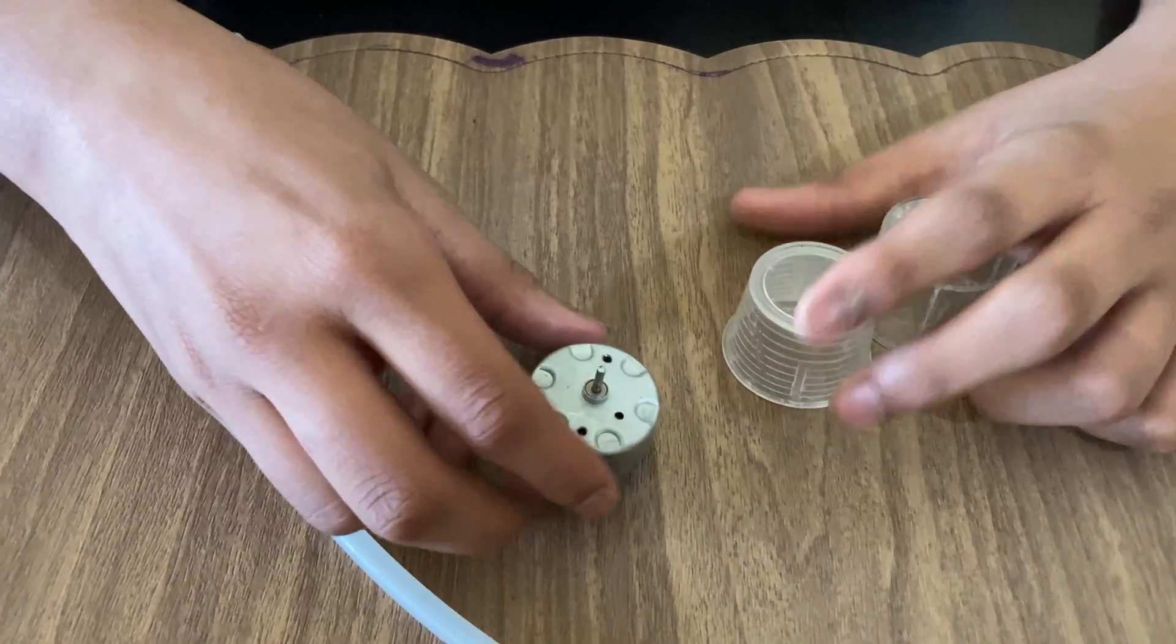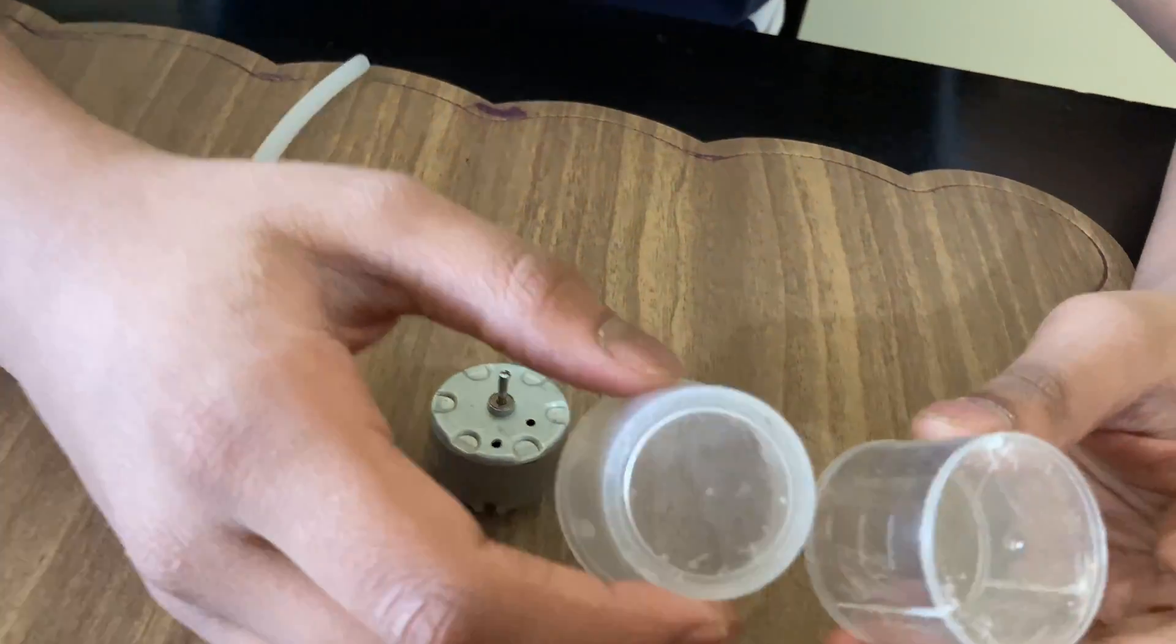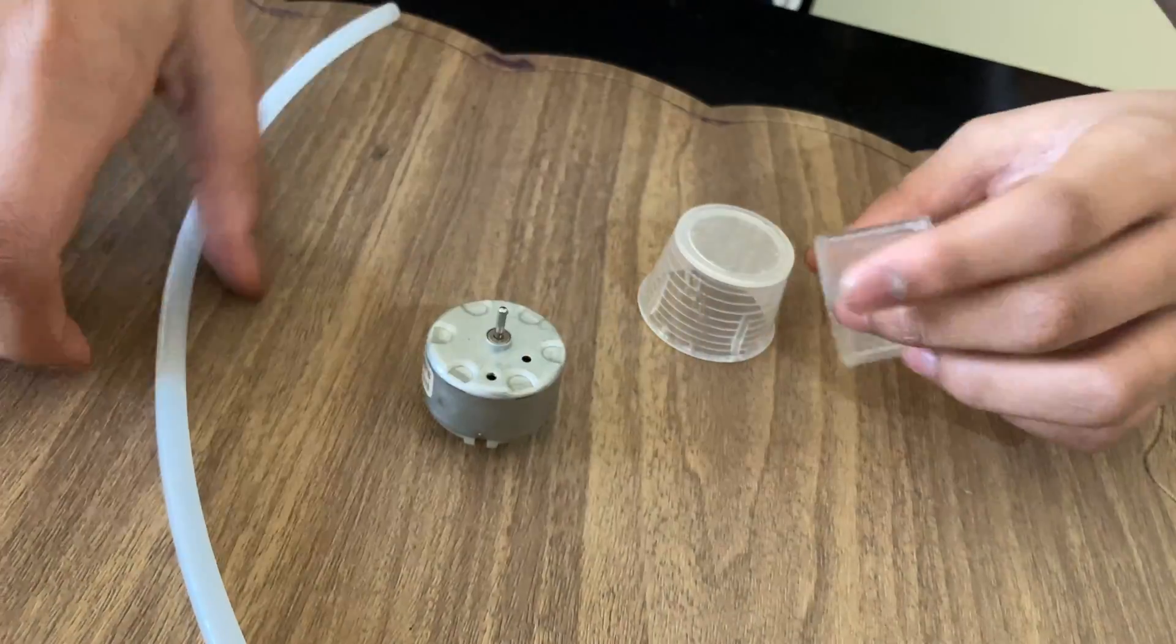So let's start. What we need to make this is a 9-volt DC motor, two medicine measuring cups, and a small pipe.